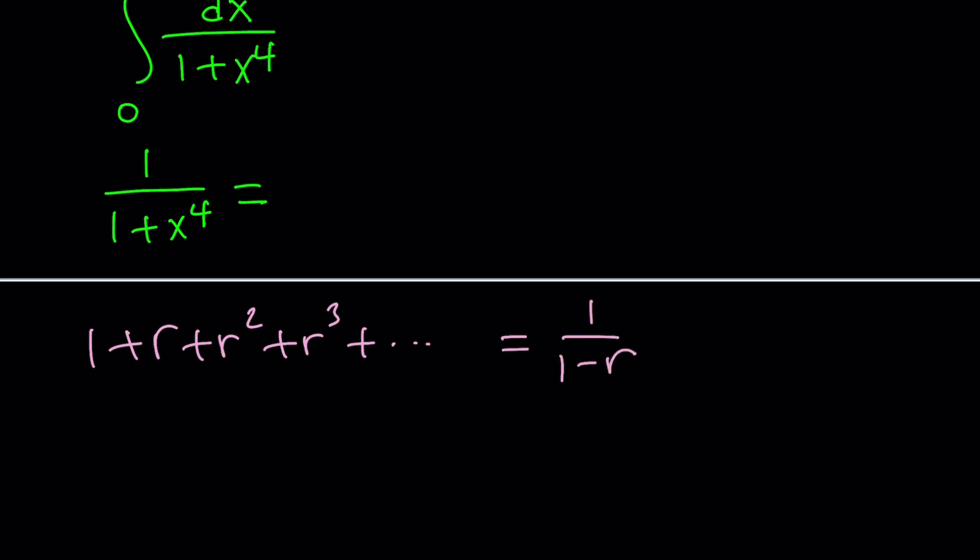What happens if I replace r with -r? That negative r brings negative signs with the odd powers, and the even powers do not change. So we get something like this. And that's exactly what we need. So we're going to start off with 1/(1 + r).